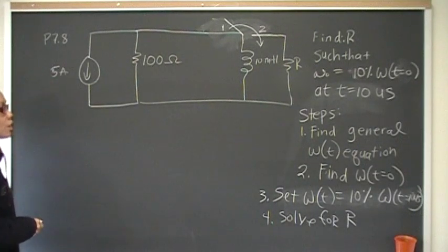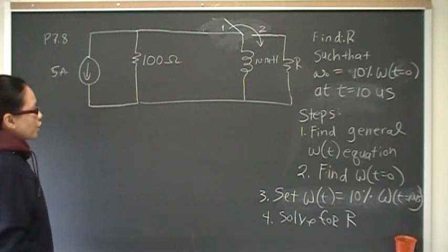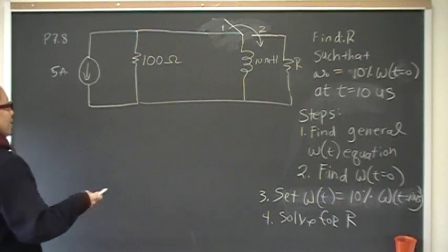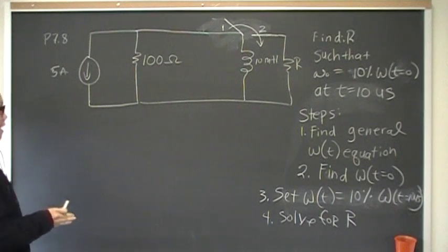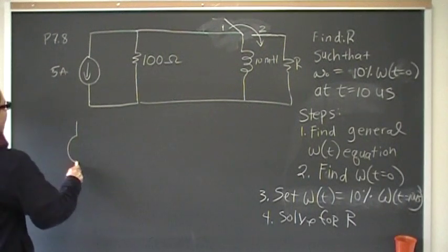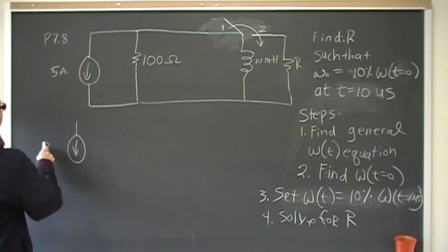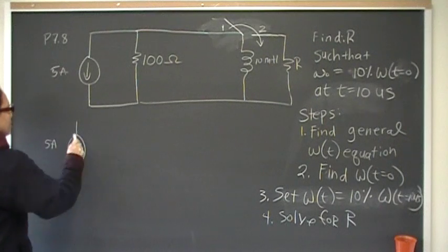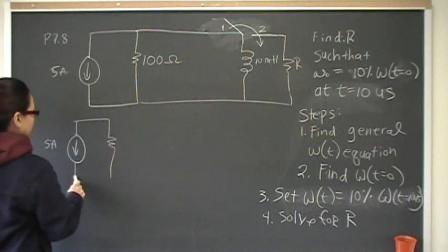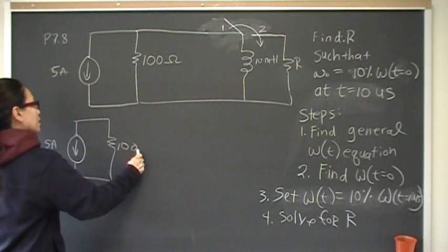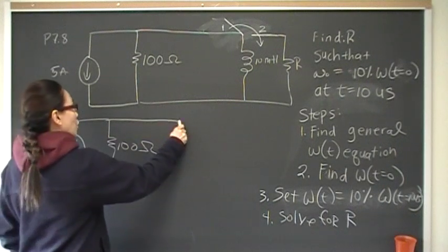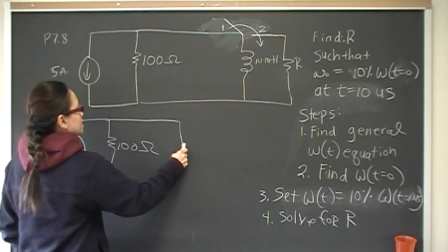So that's our goal. And before you do that, let's take a look at what is happening before the switch closes in the DC steady state. We have a 5 amp independent current source. And the circuit looks like this. It's connected in parallel with a 100 ohm resistor.